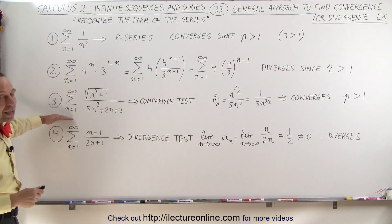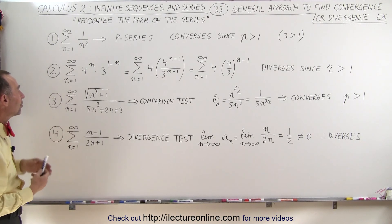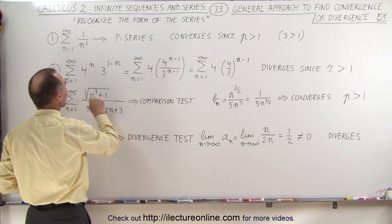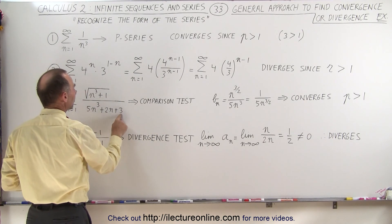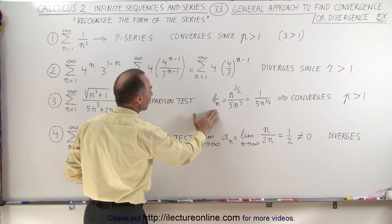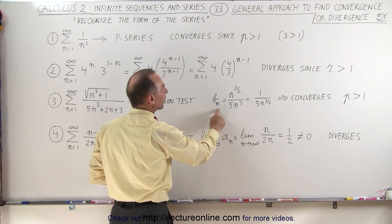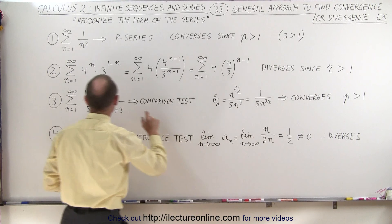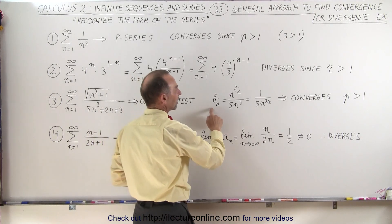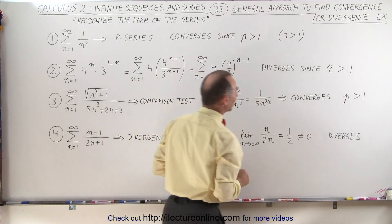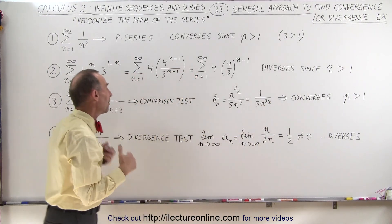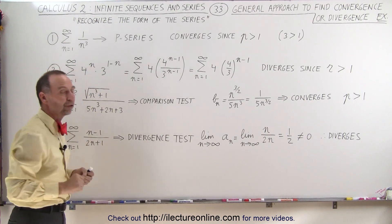On this example, at first you might wonder how to handle it, but then you realize that you can simplify it by using a comparison test. Since one is insignificant to n cubed, and 2n plus 3 is insignificant to 5n cubed, we can compare this to an infinite series where the terms b sub n look like this. We take the first of the two terms and the first of the three terms, and we recognize that this series converges because p is greater than one — the exponent in the denominator — and because of that this series converges as well.